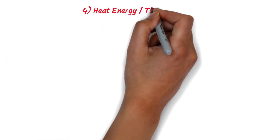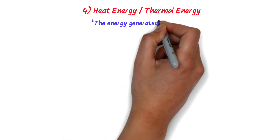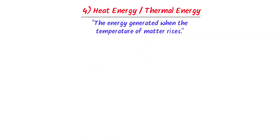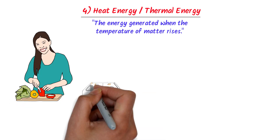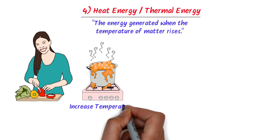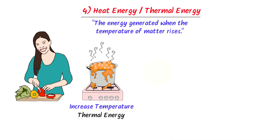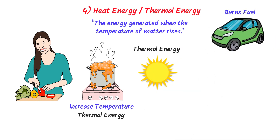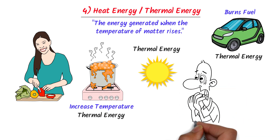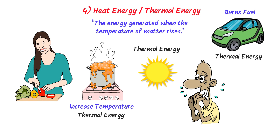The fourth form of energy is heat energy or thermal energy. The energy generated when the temperature of matter rises is called heat energy or thermal energy. For example, when you cook food at home, you need some sort of fire — by this way, you increase the temperature of your food and heat or thermal energy is generated. Secondly, the sun produces a lot of heat energy or thermal energy. Thirdly, a car's engine burns fuel to generate enough thermal energy to run properly. Fourthly, our body also produces heat or thermal energy to keep us alive. Thus remember that when the temperature of any object is increasing, heat or thermal energy is generated.